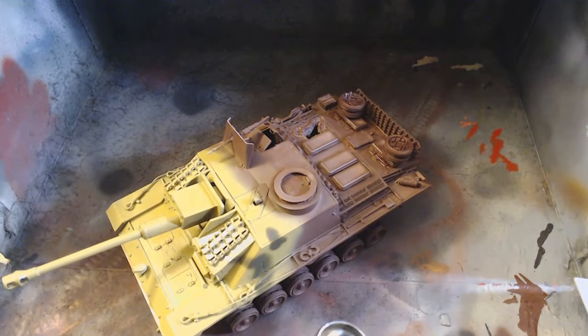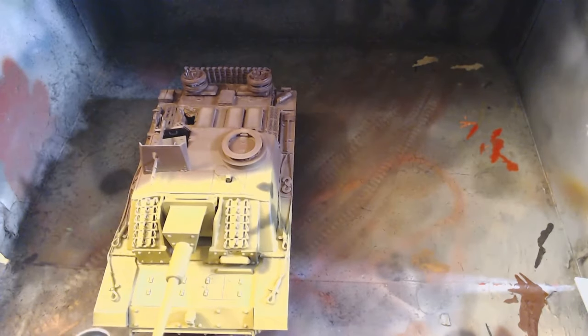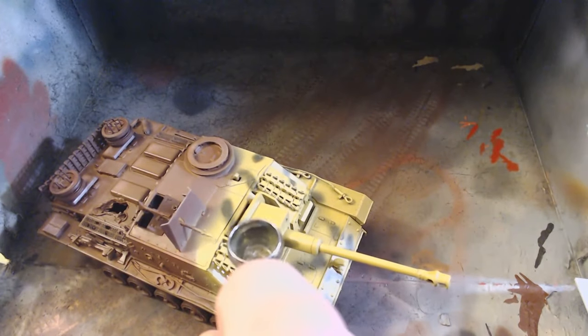Camo patterning was then added with Dark Green Dunkle Grun 71.011. I roughly followed the camo pattern in the instructions, but because I was planning on damaging things up, I wasn't terribly worried about being exact with it.